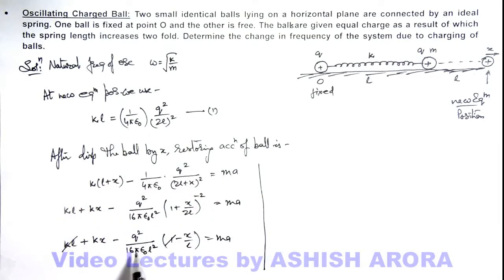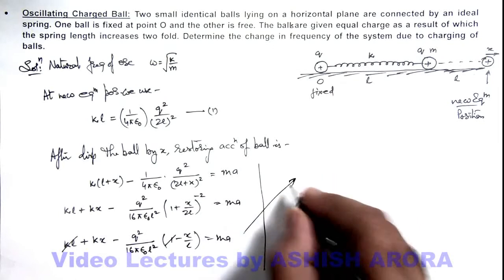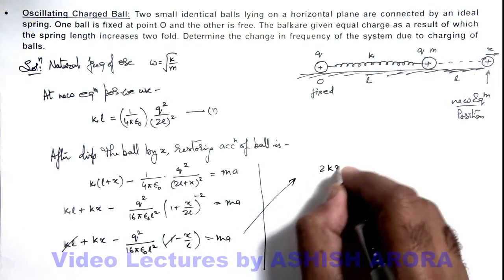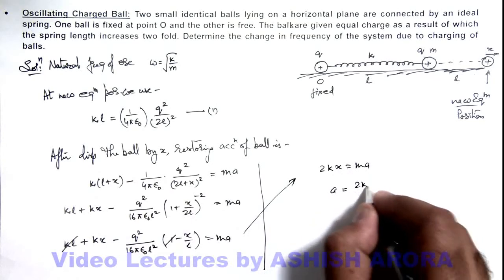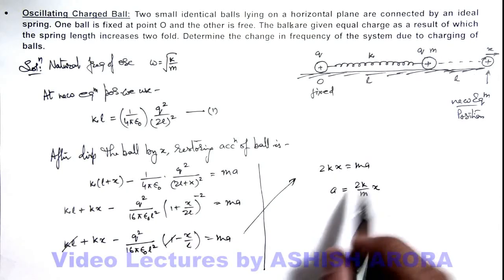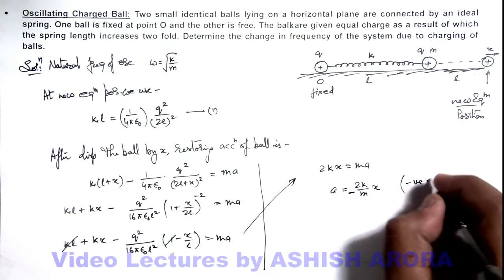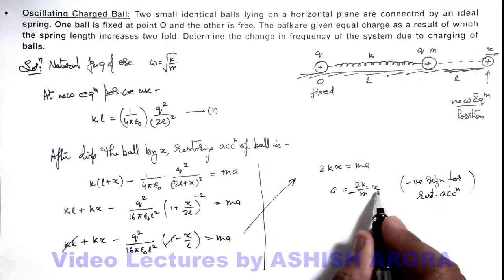And this q squared by 16π epsilon_0 l cubed can be written as k. So here I can see I am getting the final result. After this step I can write q squared by 16π epsilon_0 l cubed, I can write as k. If I take this l over here, so this will be 2kx is equal to m times a. So here the acceleration I am getting is 2k/m into x. So if this is the restoring acceleration of ball, I can put a negative sign over here because of restoring in nature. So here negative sign we have taken for restoring acceleration as it is opposite to the direction of displacement.